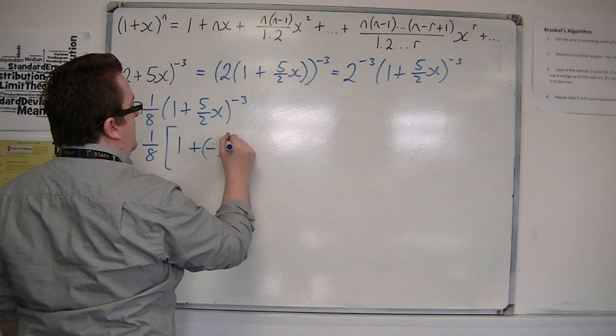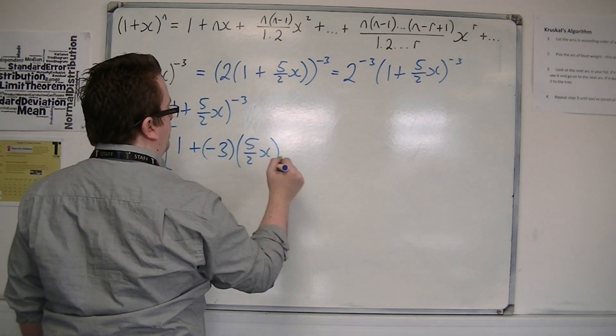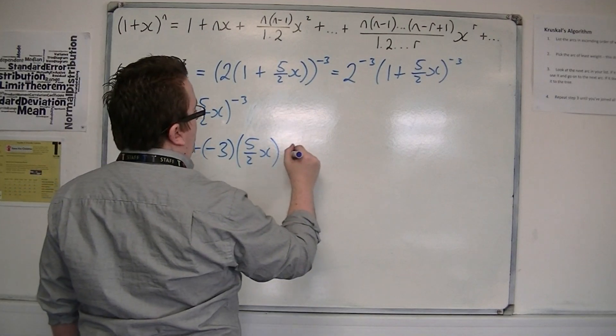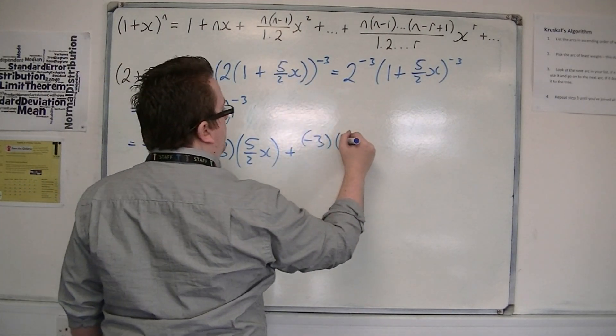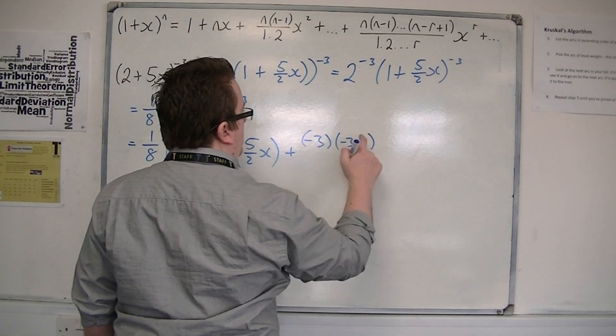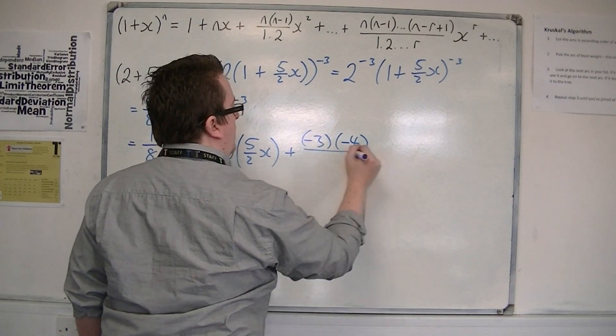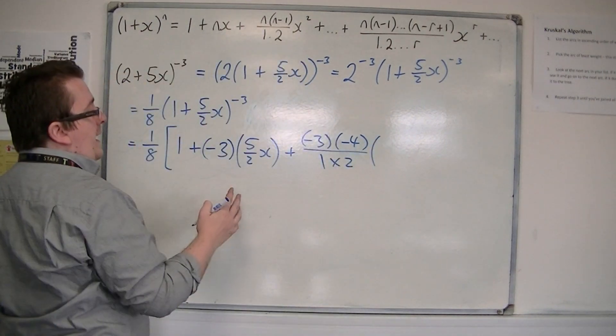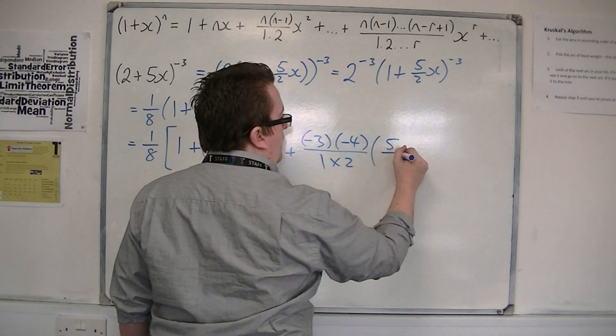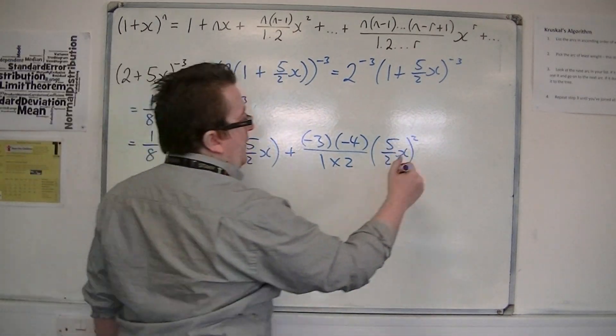which is minus 3 lots of 5/2 x, plus n times (n minus 1), so I'll write that as minus 4, over 1 times 2, times by x squared, which is (5/2 x) squared, plus other terms.